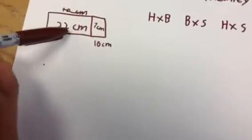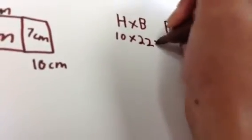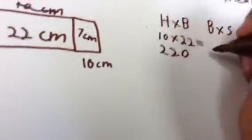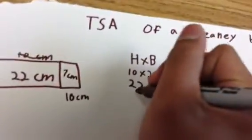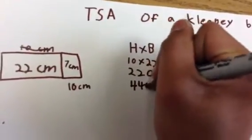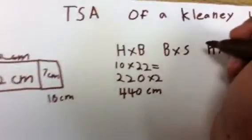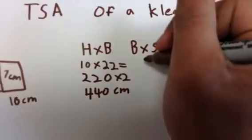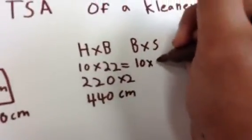So first we times the side and the bottom first. So 10 times 22, which obviously everyone knows equals 220, and then we times it by 2 which equals 440 centimeters.